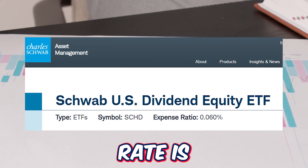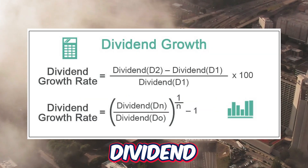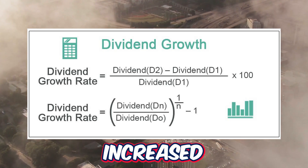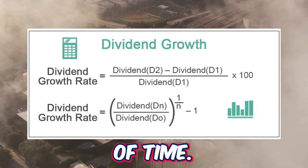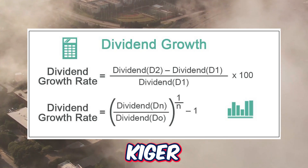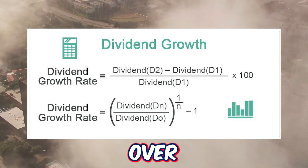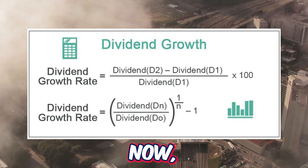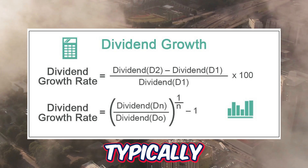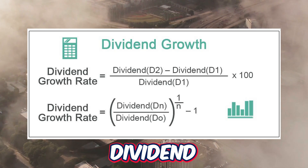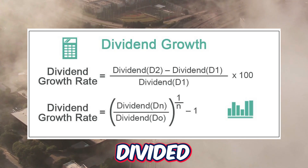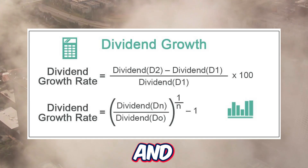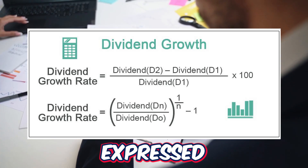Dividend growth rate is a measure that indicates the annual rate at which a company's dividend payments have increased over a specific period of time. It represents the compounded annual growth rate, or CAGR, of dividends over that period, and is expressed as a percentage. To calculate the dividend growth rate, you take the difference between the final dividend payment and the initial dividend payment, divide it by the initial dividend payment, and then divide that result by the number of years in the period.